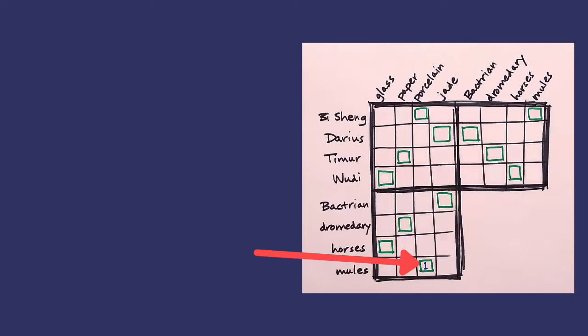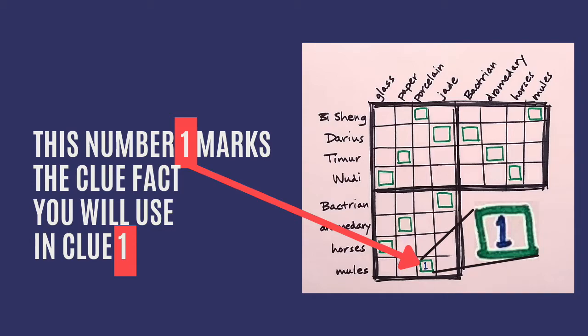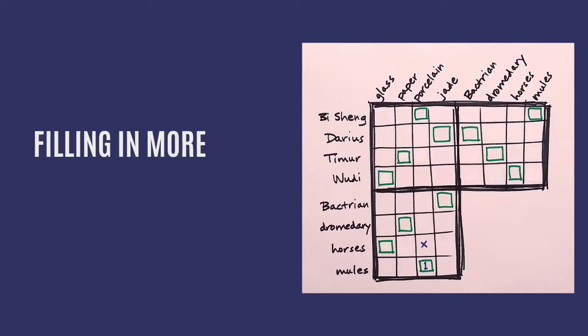The solution mark already reminds us we've decided for this fact to be part of the solution. What we're doing now is making the decision that this fact will be indicated in clue one. To remind us to use this fact when we write clue one, we can add a one in the square. Now, when the solver puts that yes in from clue one, they'll realize they can fill in the rest of that row and column.